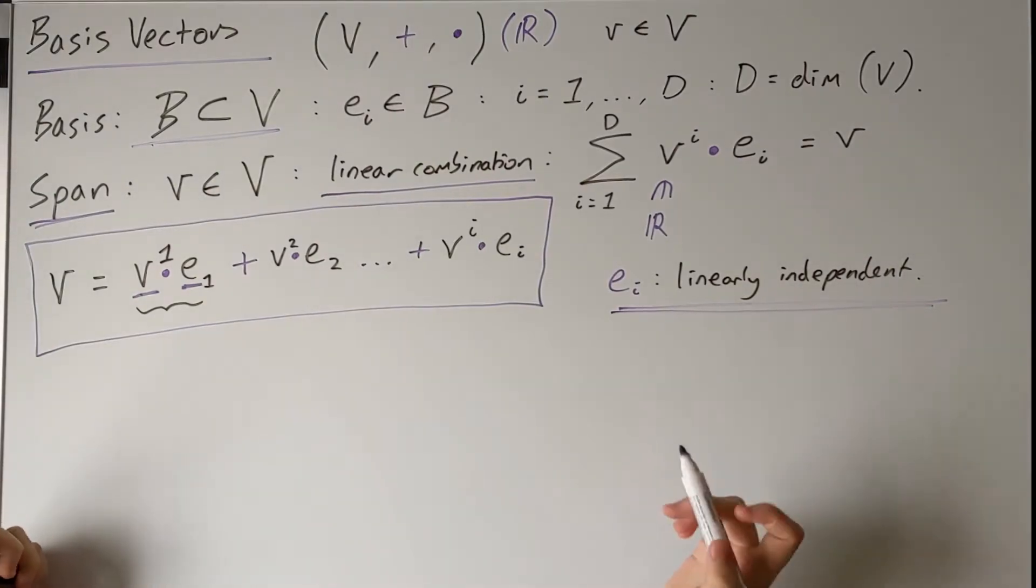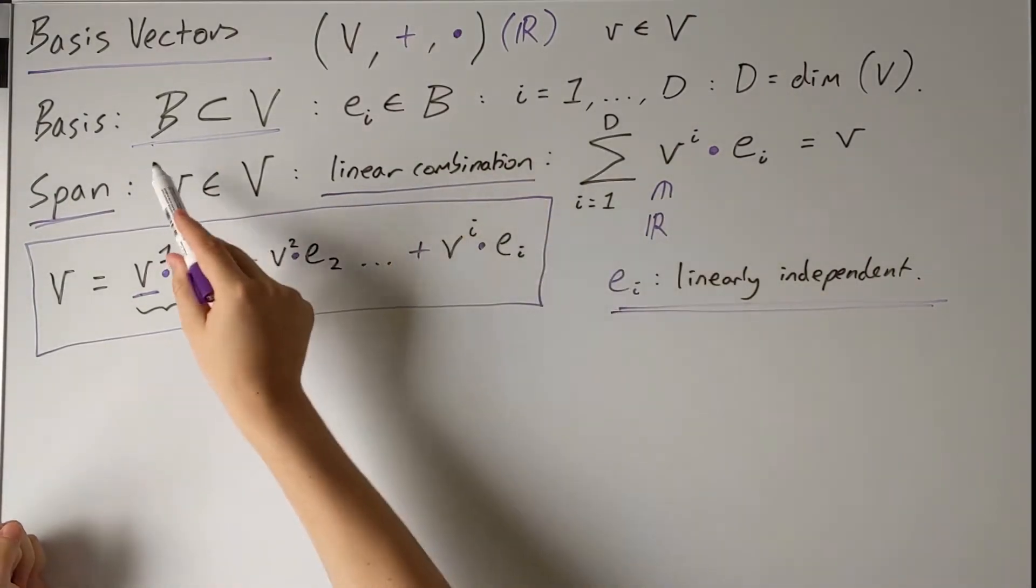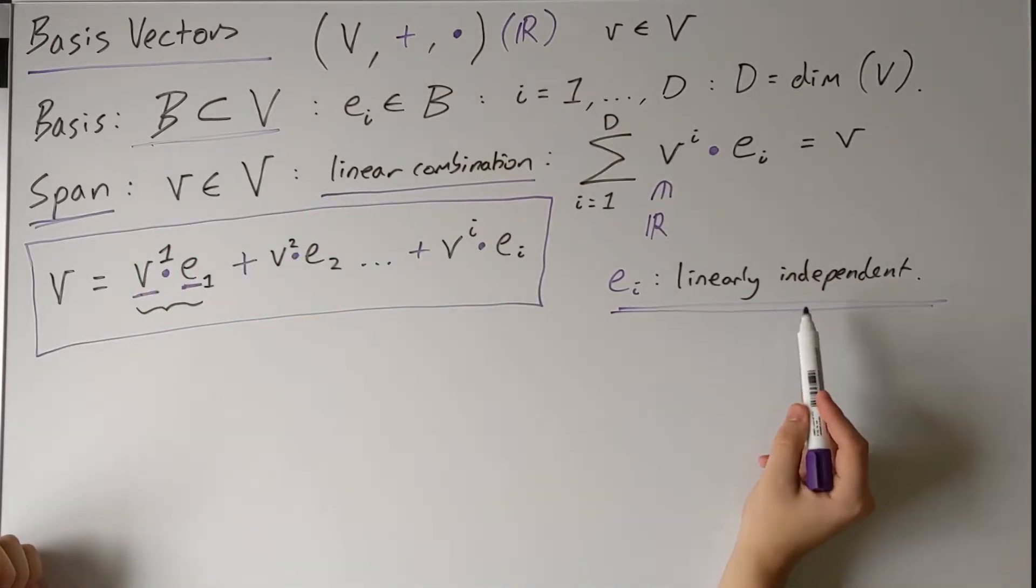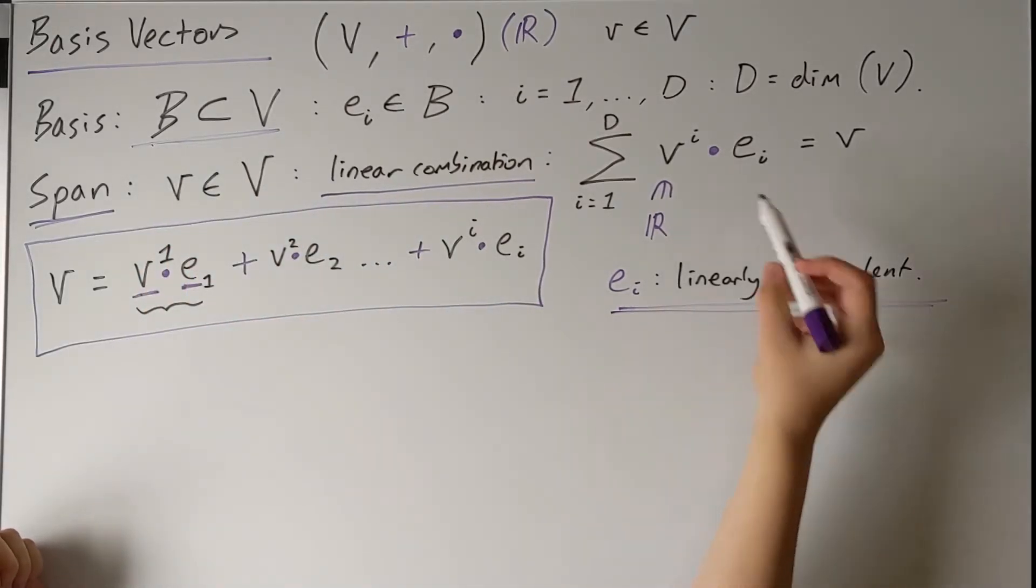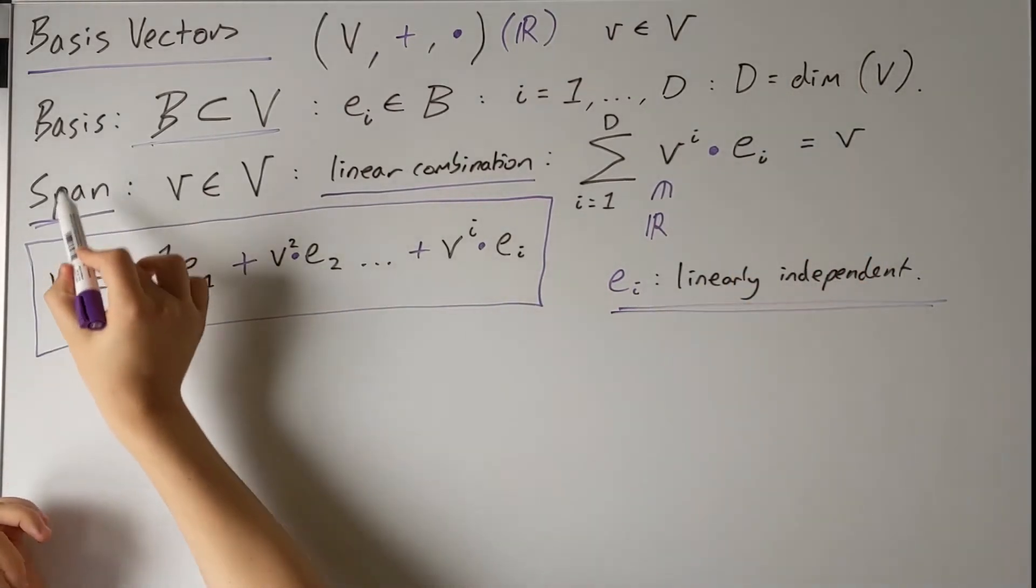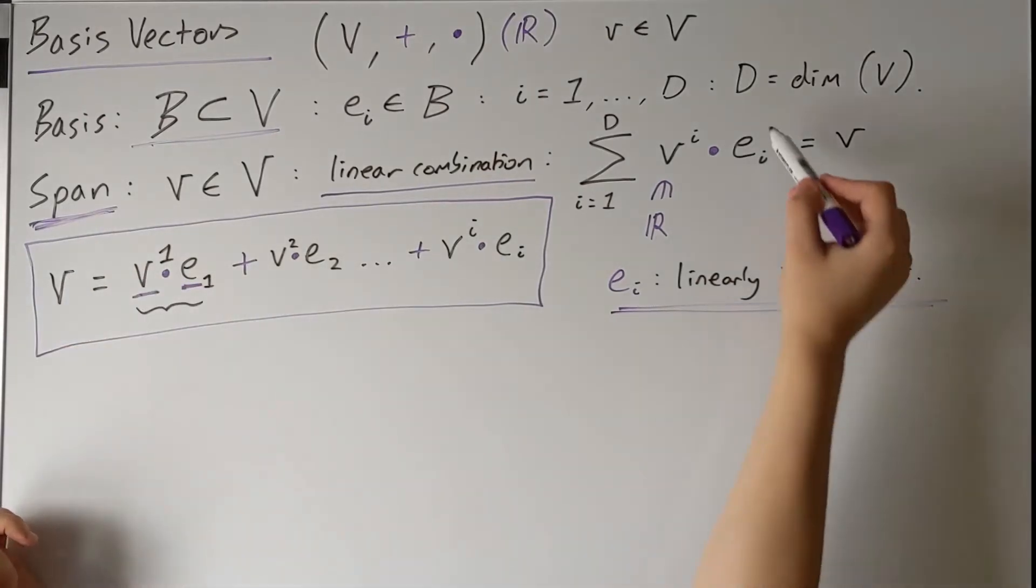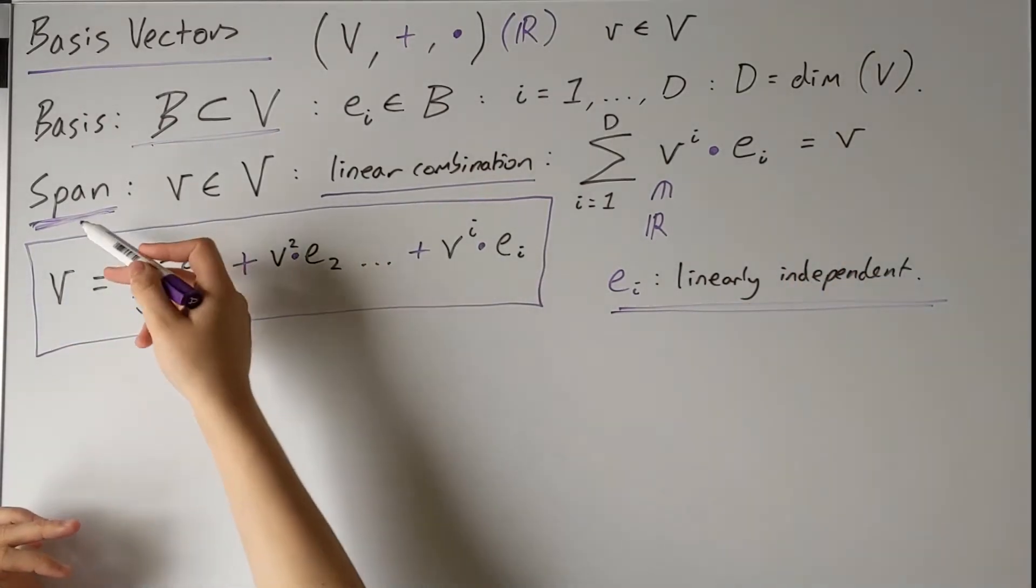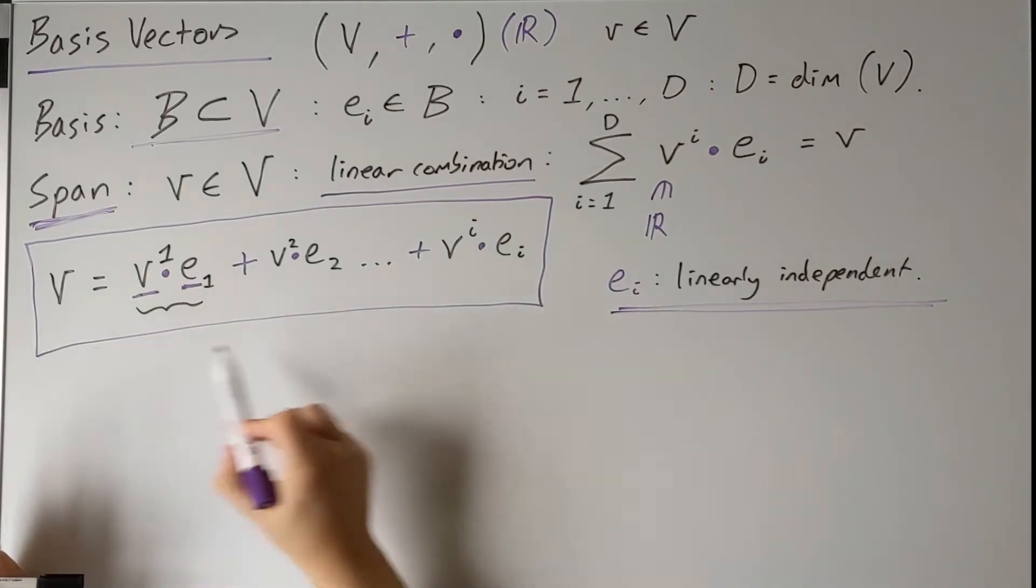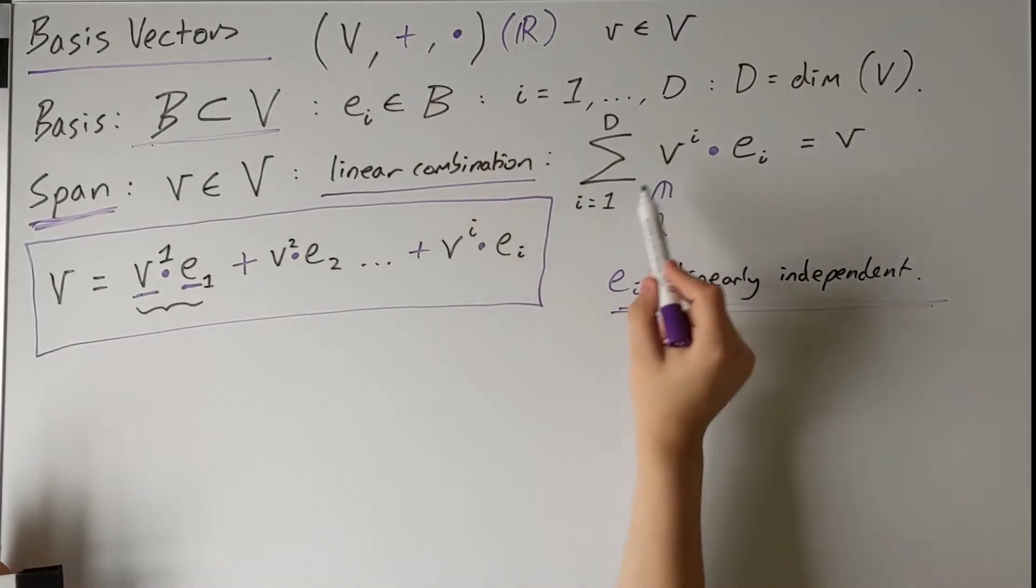All of its basis elements must be linearly independent. So just to quickly recap then, you find in your vector space a particular subset of vectors, which are linearly independent. The number of linearly independent vectors that you require to span the space is equal to the dimension. And to span the space means that every vector in the space can be expressed as this linear combination of the basis vectors.